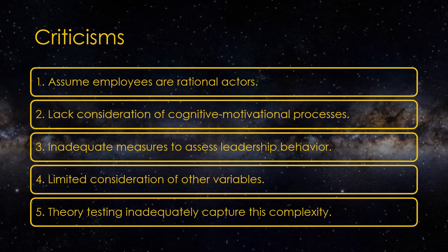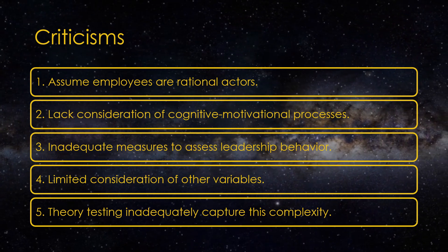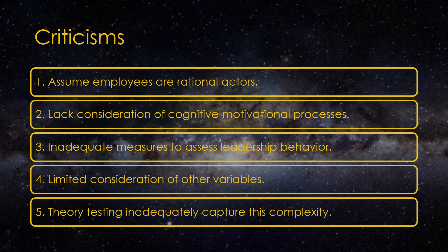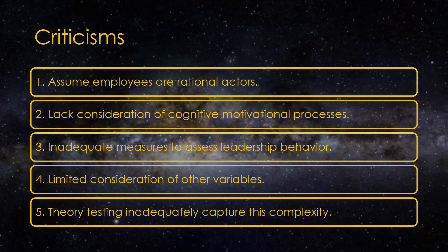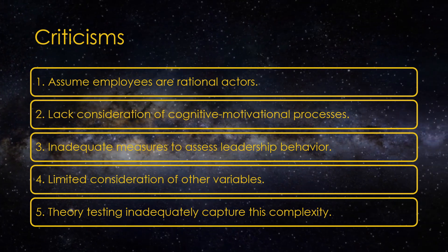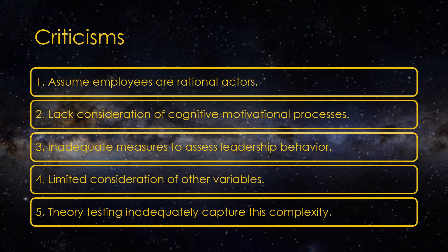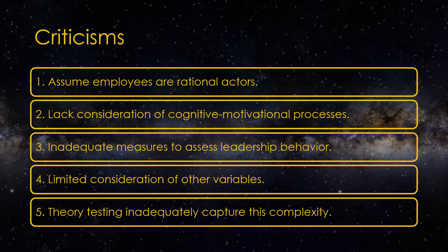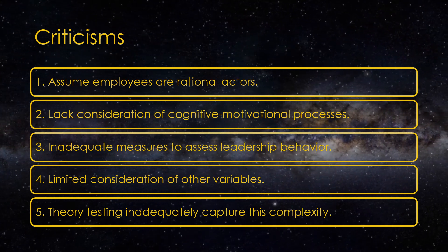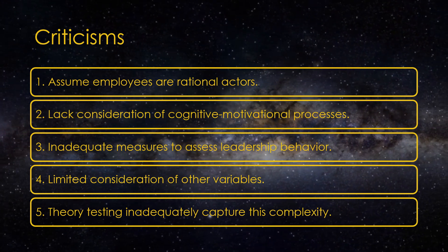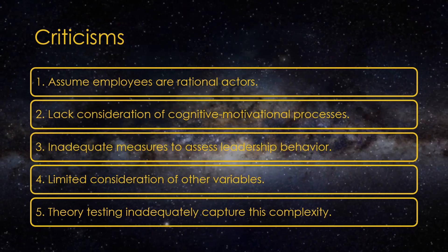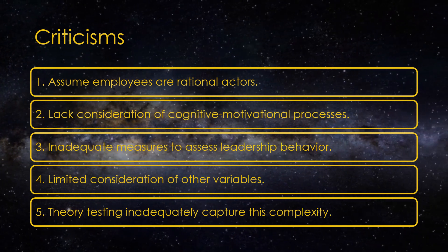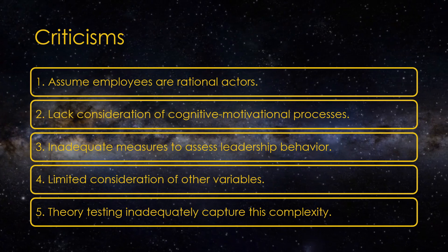The complexity of Path-Goal Theory has posed challenges for researchers attempting to test its components. The theory's proposal that leaders need to adjust their behaviors based on situational factors requires consideration of various situational variables and how they interact. However, the relatively simplistic research approaches typically used to test the theory may not adequately capture this complexity. This raises questions about the extent to which the theory's components can be effectively tested and applied in real-world settings.